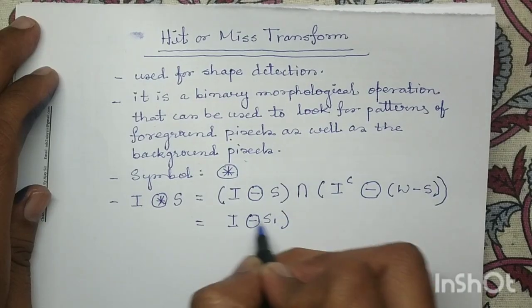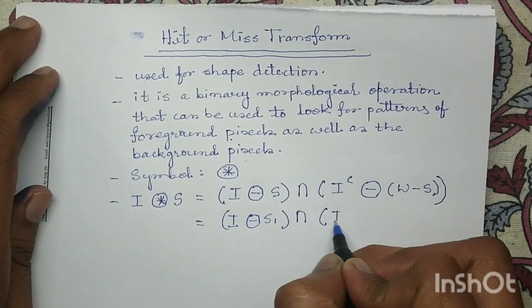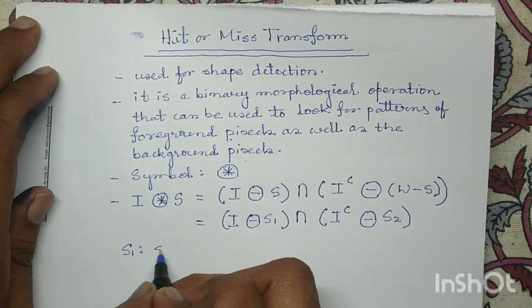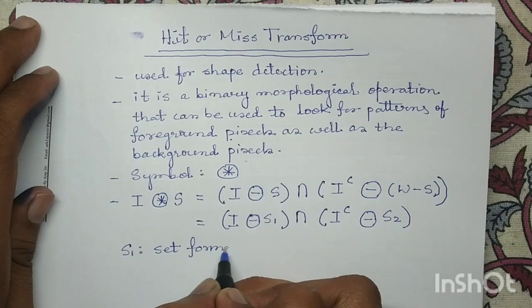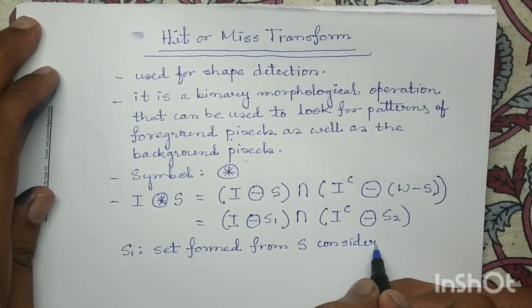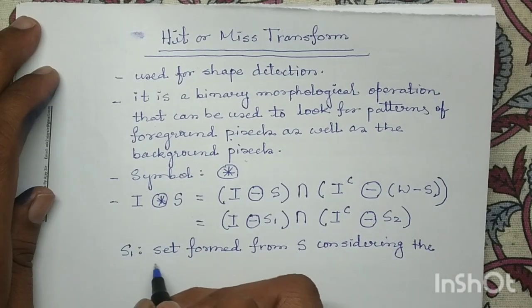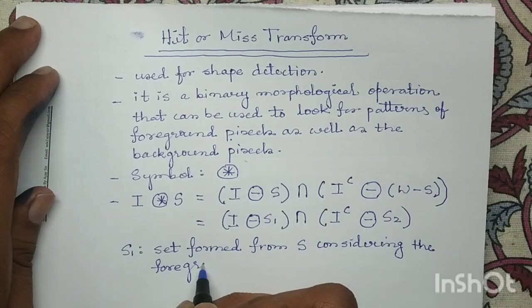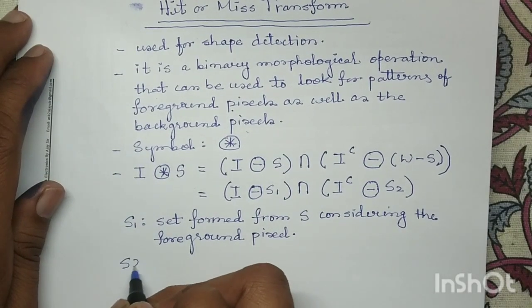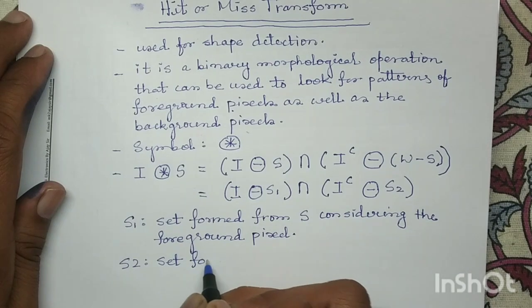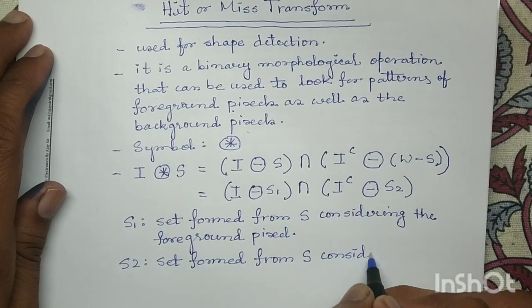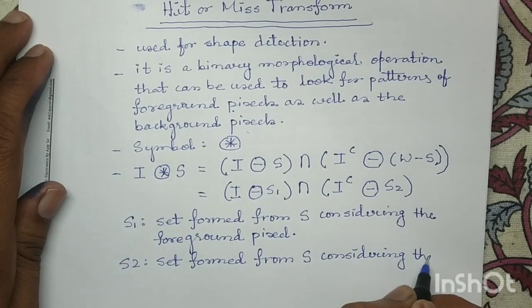This equation in simplified form can be written as: I erosion with S1, intersection with I complement erosion with S2. Where S1 is the set formed from structuring element S considering the foreground pixels, and S2 is the set formed from structuring element S considering the background pixels.